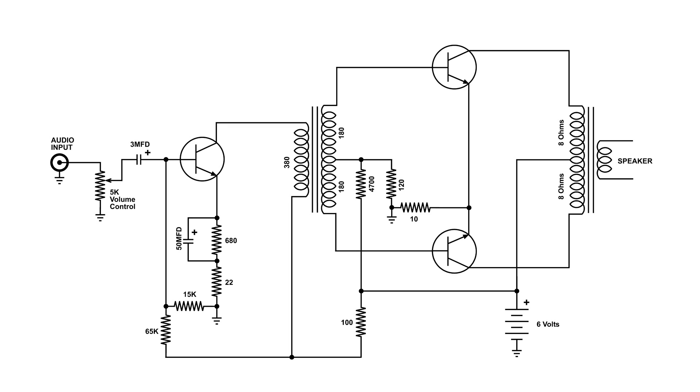All the way to the left, that's where the audio signal is applied. And that goes over to the volume control. And depending on where the volume control is set, determines how much of that signal goes through the capacitor and gets applied to the base of the first transistor.